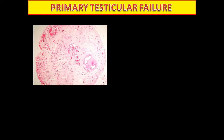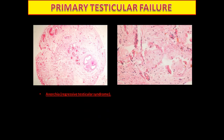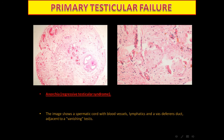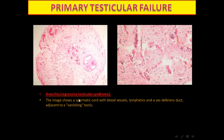What is the testicular interpretation of primary testicular failure? First, what is called anorchia or regressive testicular syndrome. In this photo we see a spermatic cord but no testicular tissue. The testicular tissue is replaced by fibrosis and dystrophic calcification with deposition of hemosiderin. You can see a ghost of a seminiferous tubule representing fibrosis — this is called anorchia, regressive testicular syndrome, or vanishing testis.